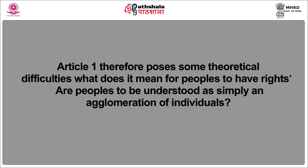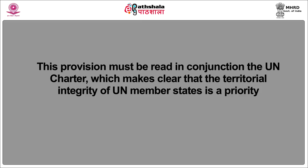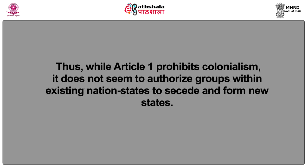Article 1 therefore poses some theoretical difficulties. What does it mean for peoples to have rights? Are peoples to be understood as simply an agglomeration of individuals? If so, why not declare that everyone has the right to self-determination? The second problem with Article 1 is that it does not clarify which groups qualify as a people to be granted the right to self-determination. This provision must be read in conjunction with the UN Charter, which makes clear that the territorial integrity of UN member states is a priority. Thus, while Article 1 prohibits colonization, it does not seem to authorize groups within existing nation states to secede and form new states.